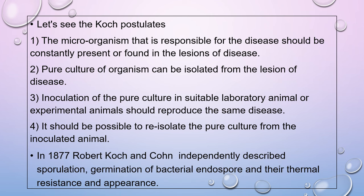In 1877, Robert Koch and Cohn independently described the sporulation and germination of bacterial endospores, as well as their thermal resistance and appearance.